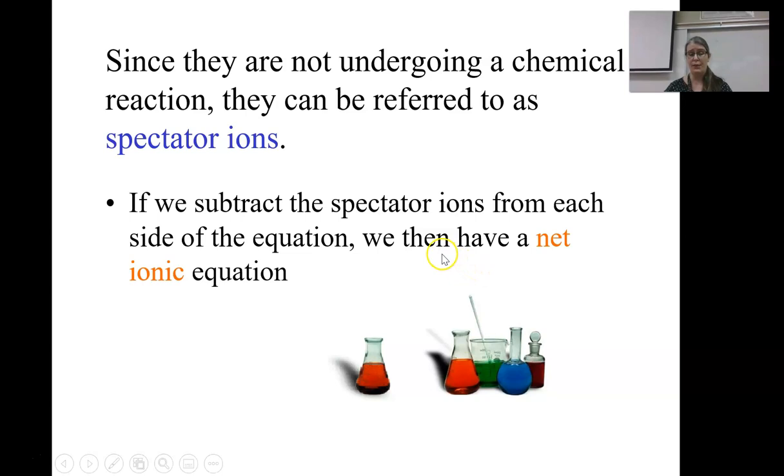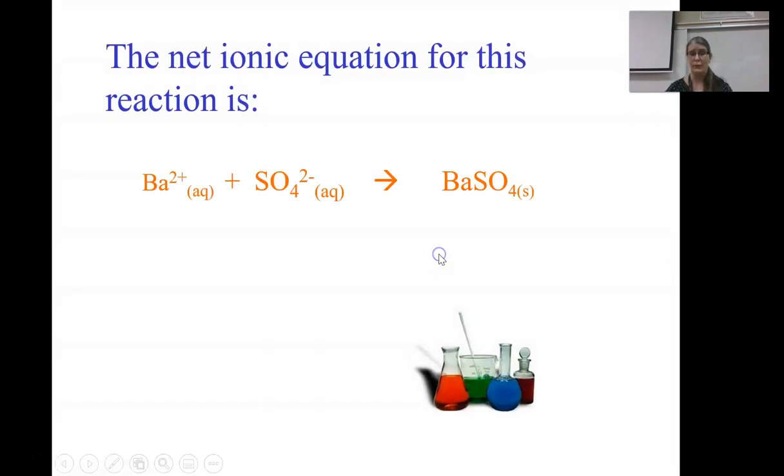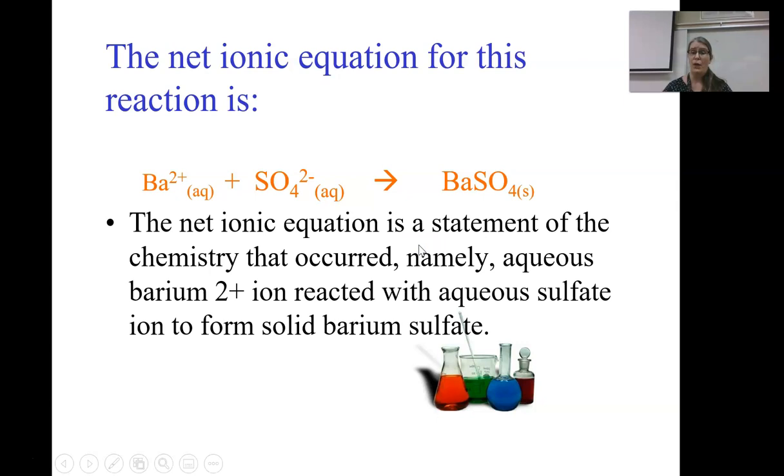So if I take these sodium and chloride ions out, I get my net ionic equation. This really is what happens in the chemistry. These sodium ions and the chloride ions are going to go right down the drain with the filtrate when I, if I filtered out this precipitate. This lets me focus on what's really important.